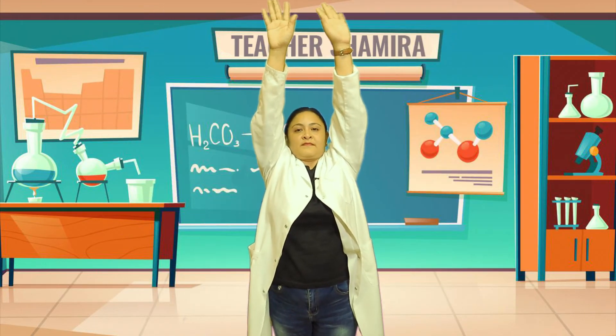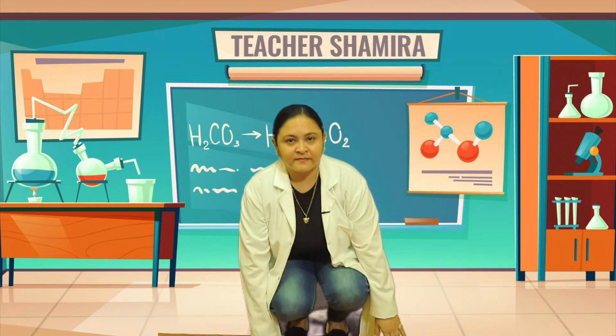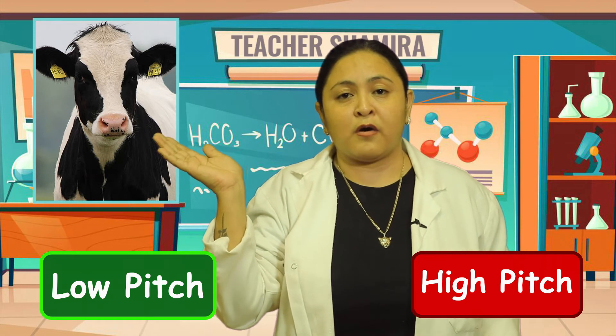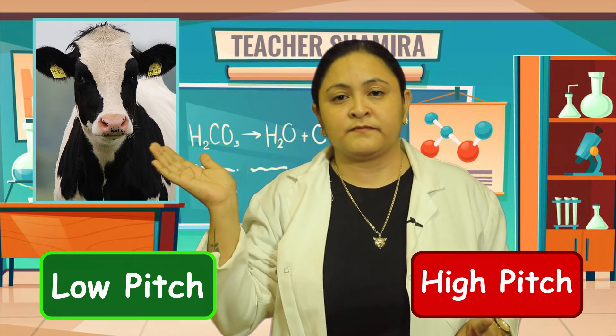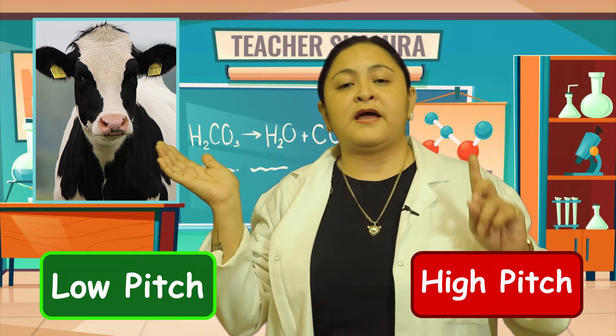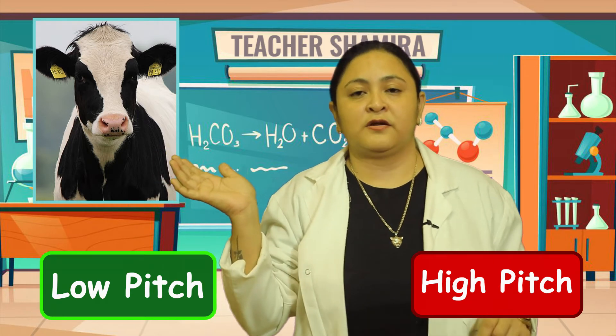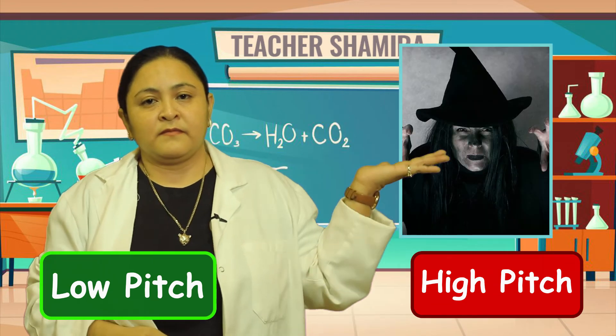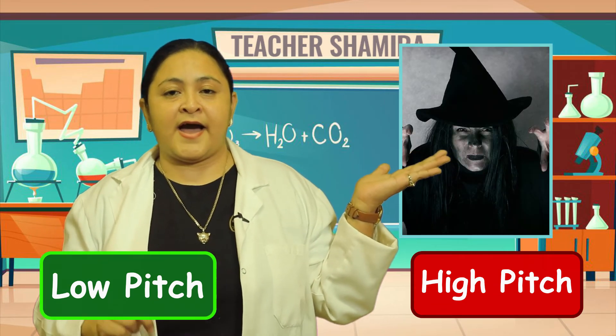Now that we have learned how high and low pitch sounds are made, we are going to listen to different sounds and identify whether they have a high pitch or a low pitch. Stand up — when you identify the sound, if you think it has a high pitch, stand tall and raise your hands reaching for the sky. If you think it has a low pitch, squat down. The first sound is the sound of a cow. Do you think it is a high pitch or a low pitch? Very good — it is a low pitch. Now the second one: the laughter of a witch. Do you think it has a high pitch or a low pitch? Excellent — it has a high pitch!